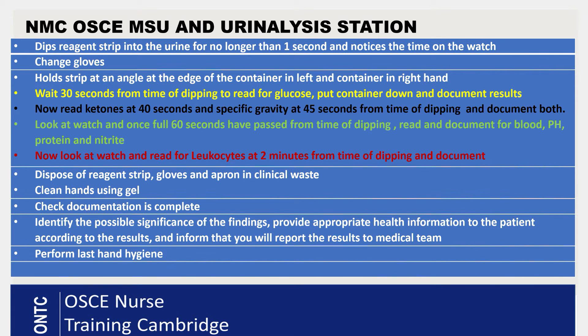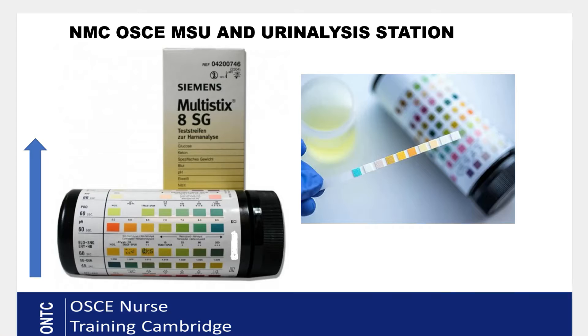At 60 seconds from the time of dipping, read blood, pH, protein, and nitrite. You can compare two at a time — first blood and pH, write those results, then protein and nitrite, compare to the appropriate pads on the container chart, and write those results. If it takes 61 or 62 seconds to complete all four, that is absolutely fine.